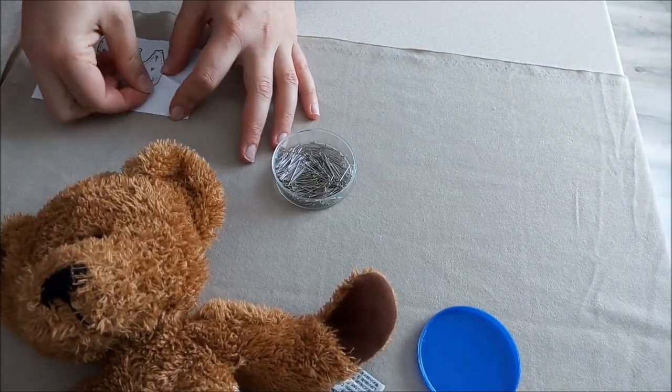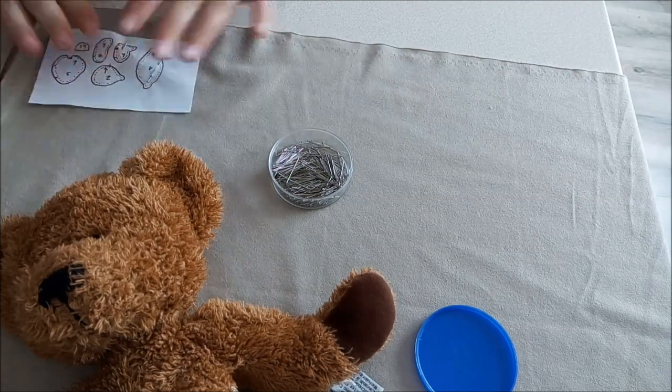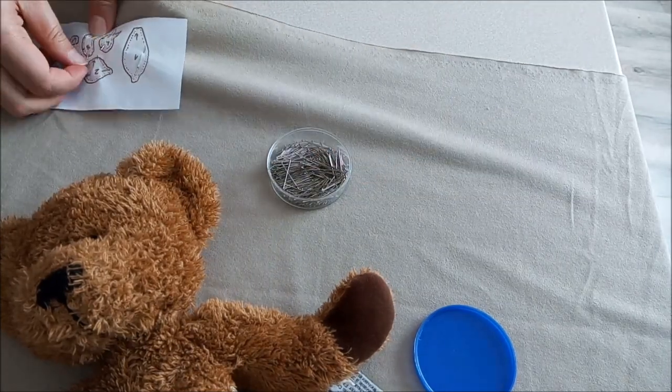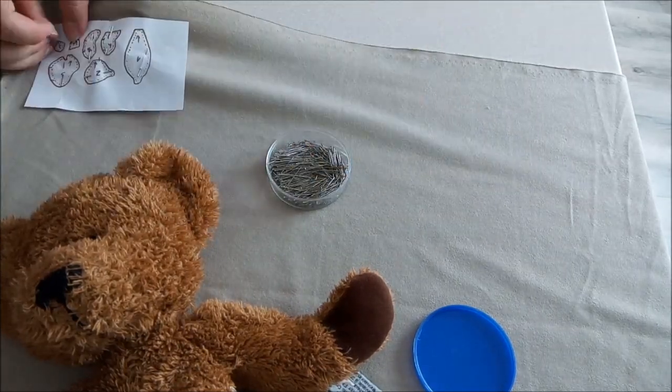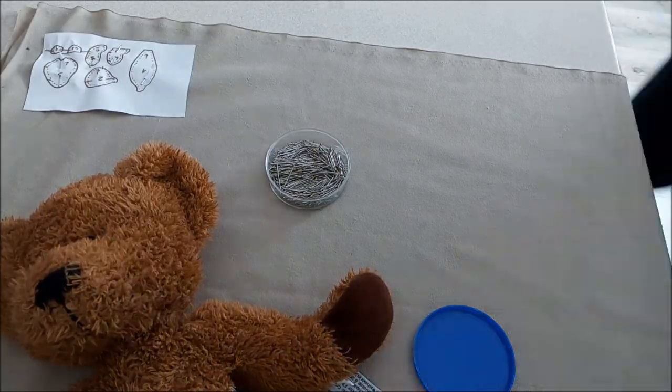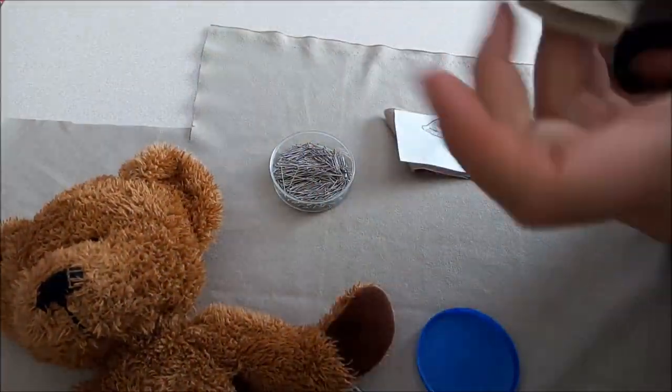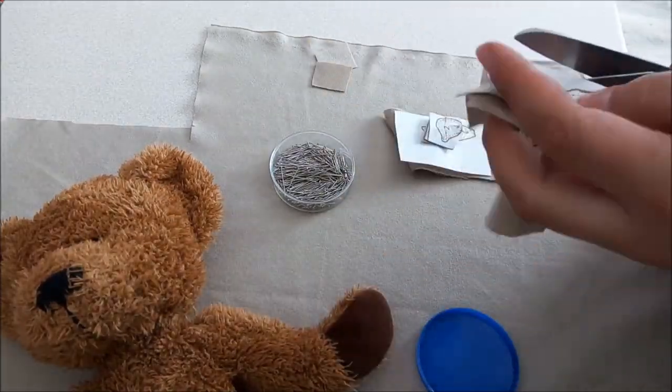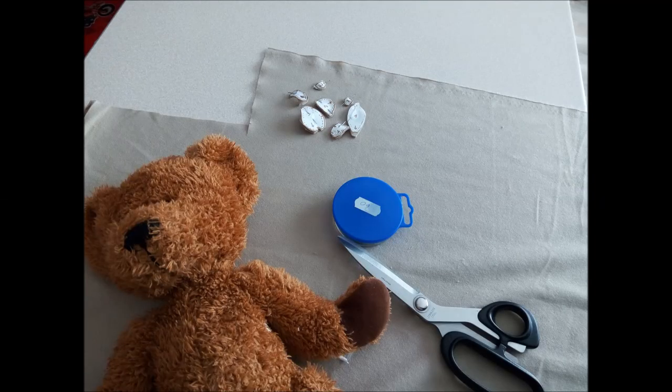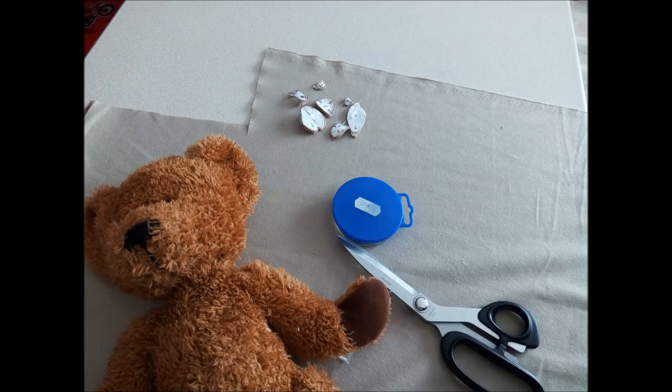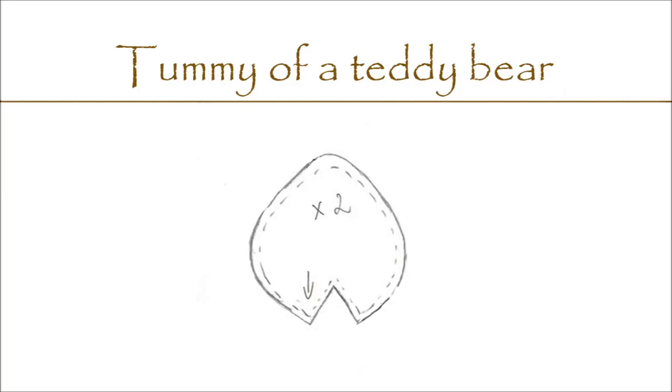To start with, we put all the pattern on the material from which we intend to sew the teddy bear and pin it accurately. We cut. If we do it from a thin material, we can cut through a double layer. If we choose thicker like plush, best to do it from a single layer. We cut the belly twice.